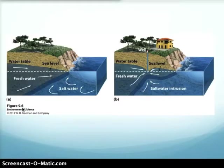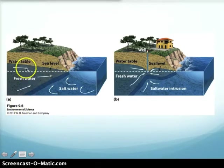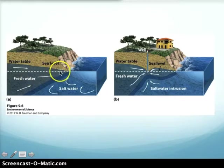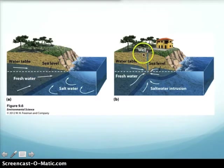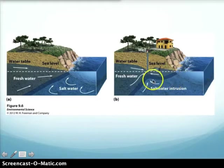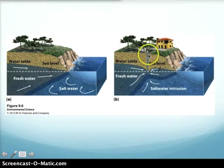In coastal areas, under normal conditions there is fresh water underground, and a relatively high water table creates enough water pressure to keep salt water out. But when many wells are drilled and the aquifer is depleted, the water table lowers, reducing pressure and allowing nearby salt water to move in — contaminating wells and making them unusable. This process is called saltwater intrusion.